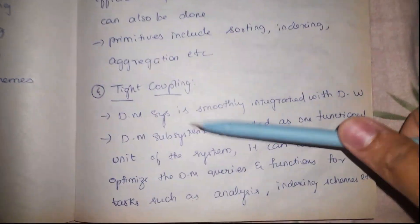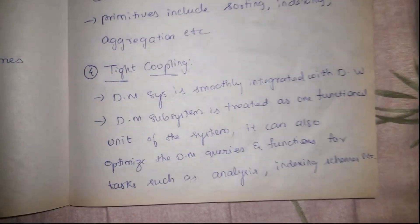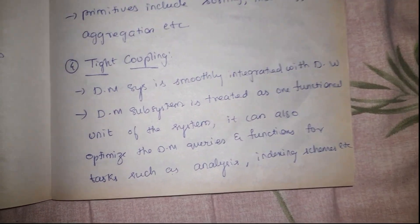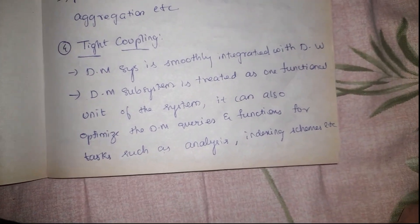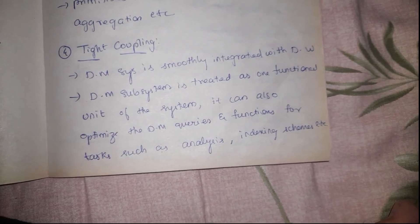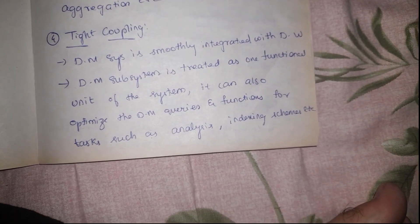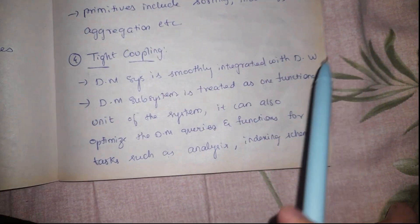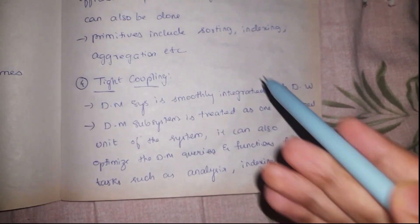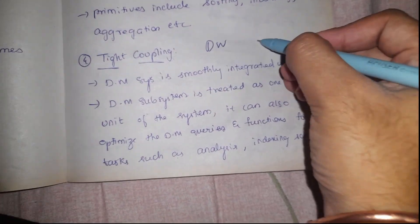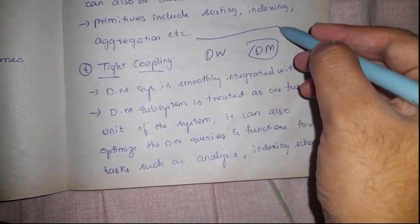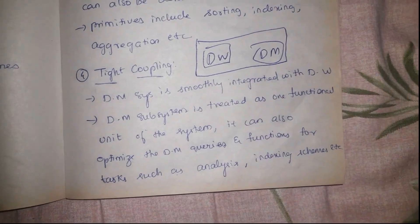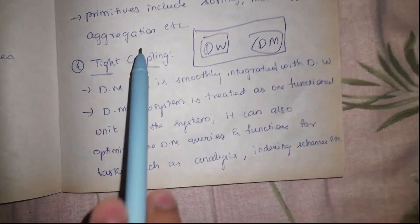The fourth mechanism is tight coupling, which means complete integration of the data mining system with the data warehouse. The data mining system will, apart from fetching the data, utilize all the functionalities and capabilities of the data warehouse. Basically, the data mining system and data warehouse will be combined as one single unit and will coordinate and work with each other perfectly.